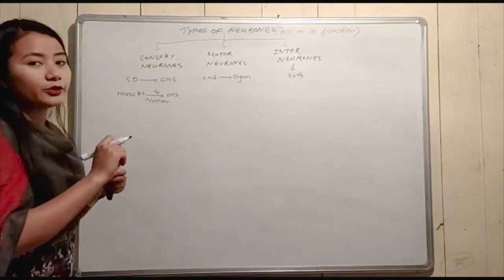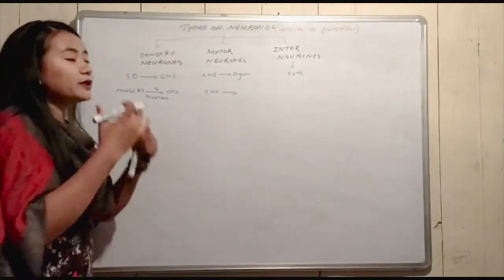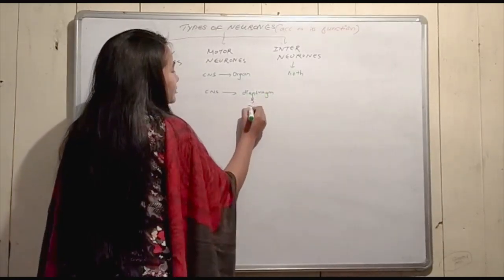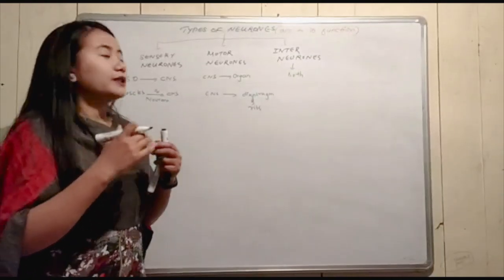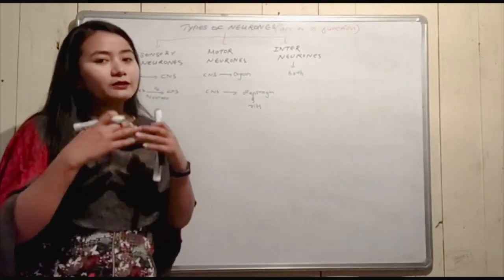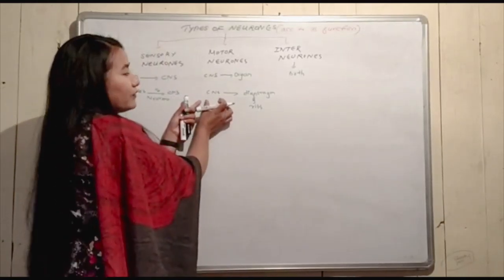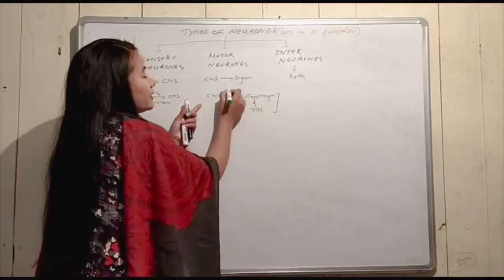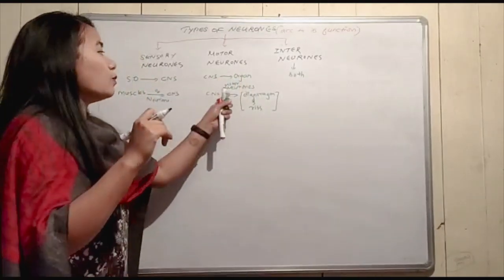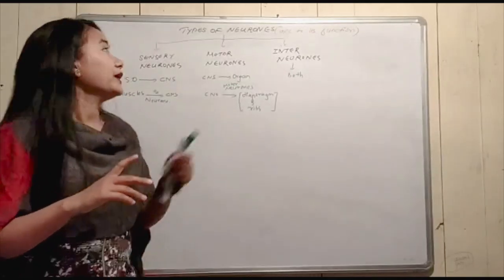The sensory neuron detects that information and sends it to the central nervous system. The brain then orders the effector organs — such as the diaphragm and rib muscles — to contract and relax so that more oxygen can be brought in. The neuron that carries the order from the brain to those effector organs is the motor neuron. The inter-neuron connects the sensory and motor neuron functions.